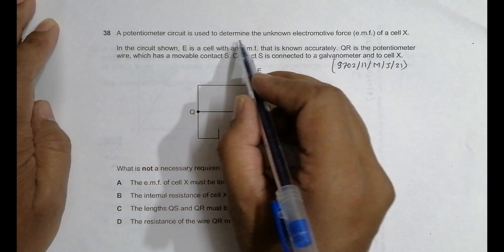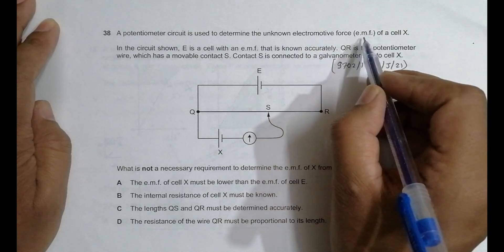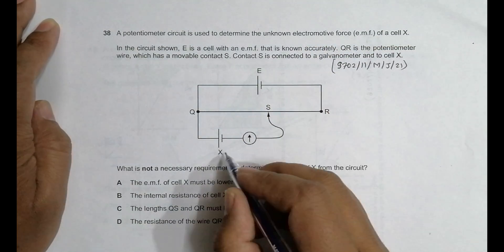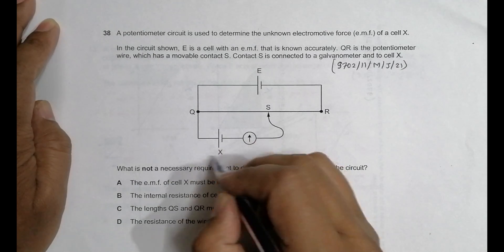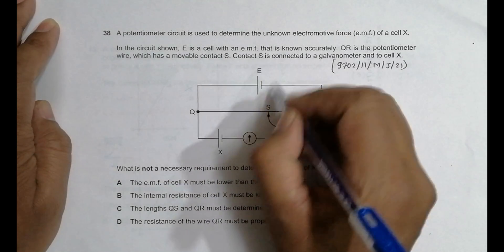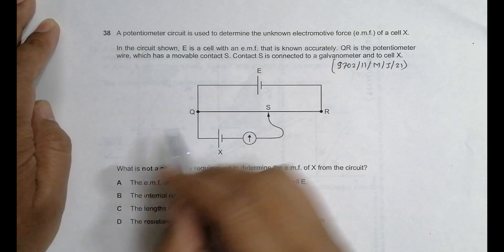A potentiometer circuit is used to determine the unknown electromotive force (EMF) of a cell X. Yes, it's true. So it will be used to determine its E by the help of this E, by the help of another master cell.